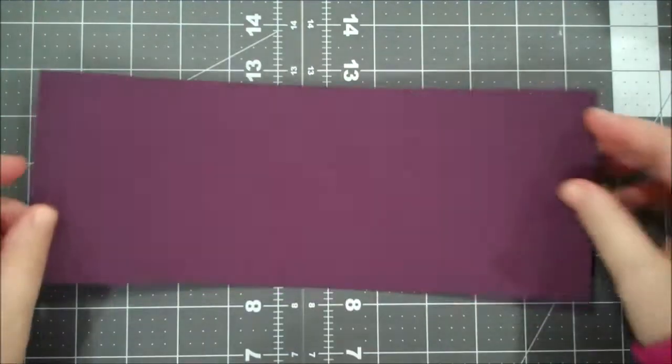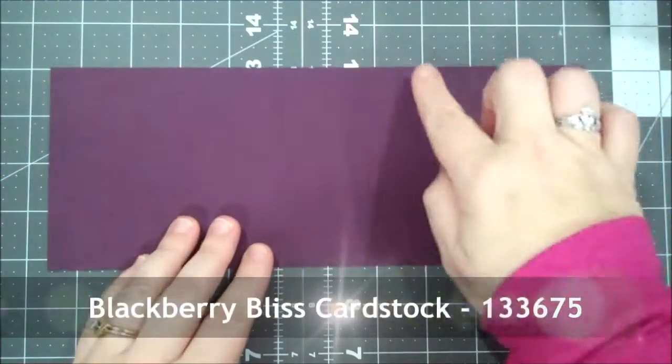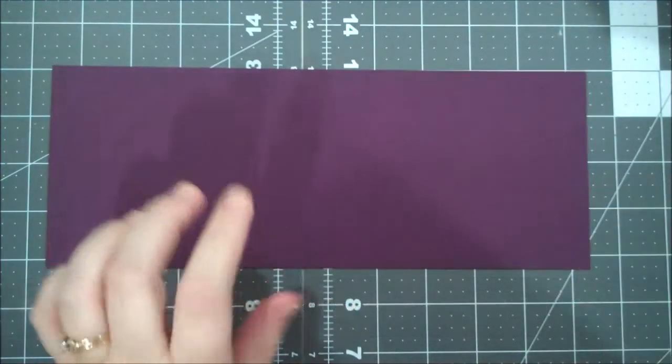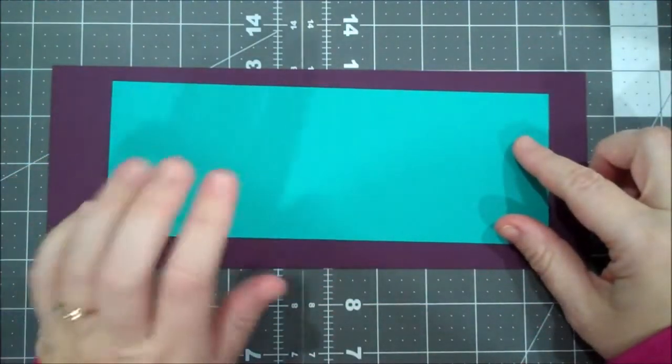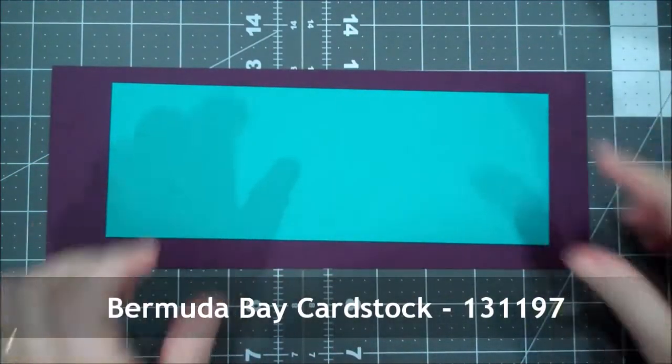So I am using a piece of Blackberry Bliss, this is four and a quarter by eleven. We're going to do some scoring. I have a piece of Bermuda Bay that is three and a quarter by nine, we're going to score that as well.